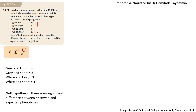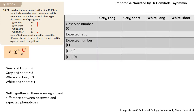To walk through this I've prepared a table. In the table I've stated the observed number, the expected ratio, and the expected number, which will lead us to the chi-squared value. The observed numbers are given: gray and long is 54, gray and short is 4, white and long is 4, and white and short is 18. These are the numbers from the actual cross.